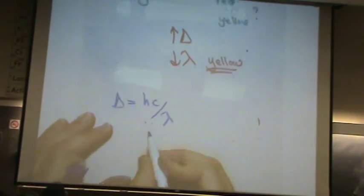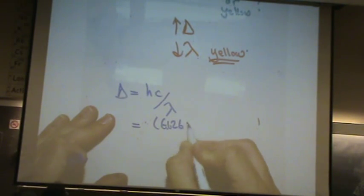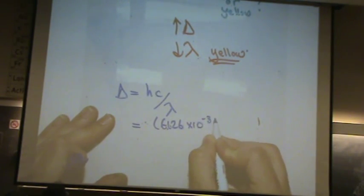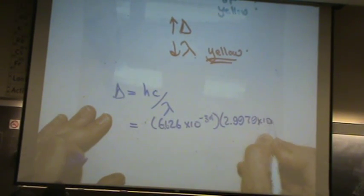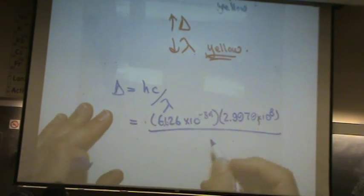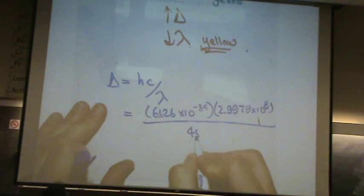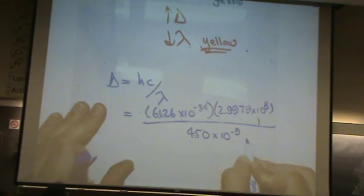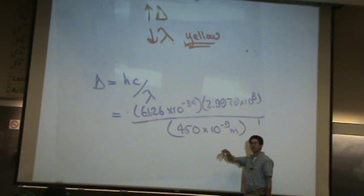What's delta for the orange compound? That would be h — 6.626 times 10 to the minus 34 — times c, which is 2.9979 times 10 to the eighth, divided by lambda. You use the absorbed color, which is 450 nanometers — convert that to meters. So again, I'm using the absorbed color; the blue range is what's absorbed.